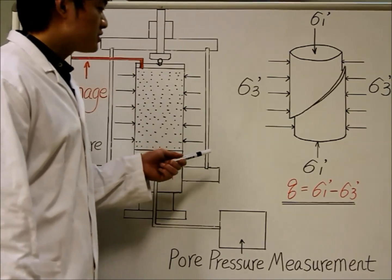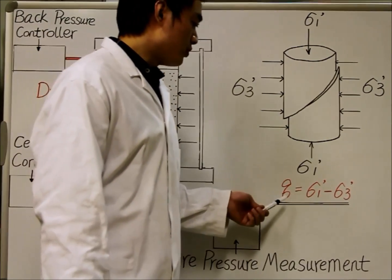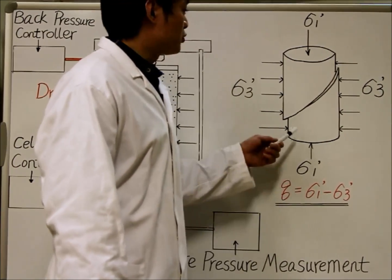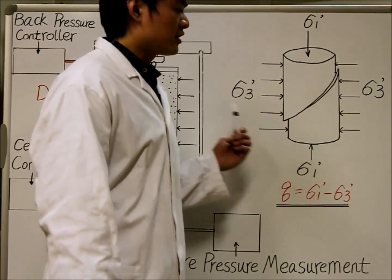The sample will then be sheared by the deviatoric stress Q, which is the difference between the vertical stress and confining stress.